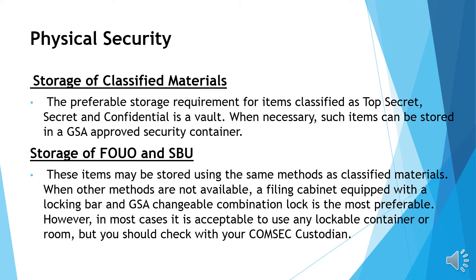Storage of classified materials: the preferable storage requirement for items classified as top secret, secret, and confidential is a vault. When necessary, such items can be stored in a GSA-approved security container. Storage of FOUO/NSB items: these may be stored using the same method as classified materials. When other methods are not available, a filing cabinet equipped with a locking bar and a GSA changeable combination lock is most preferable. However, in most cases it is acceptable to use any lockable container or room, but you should check with your COMSEC custodian.